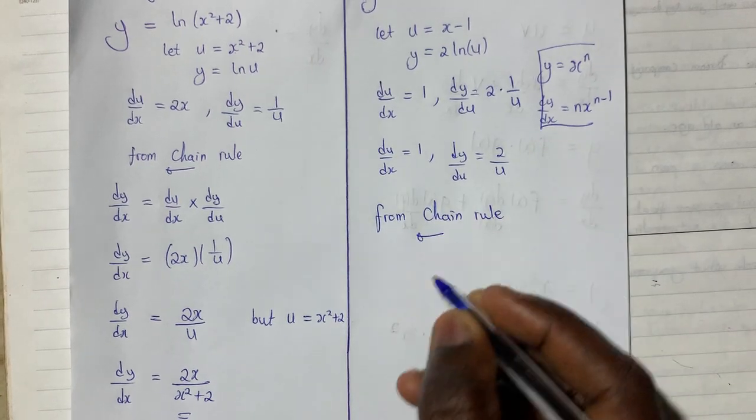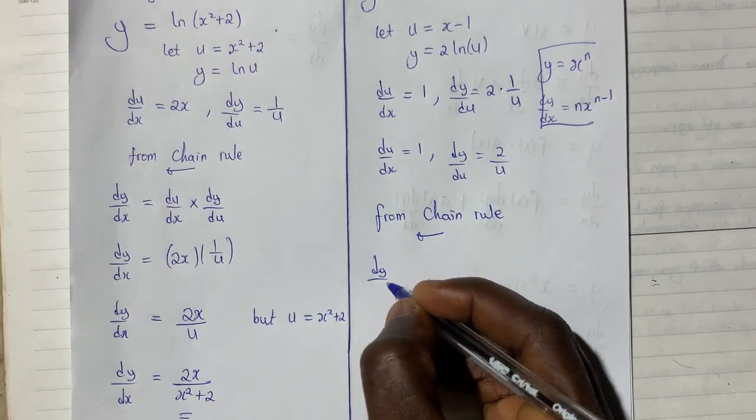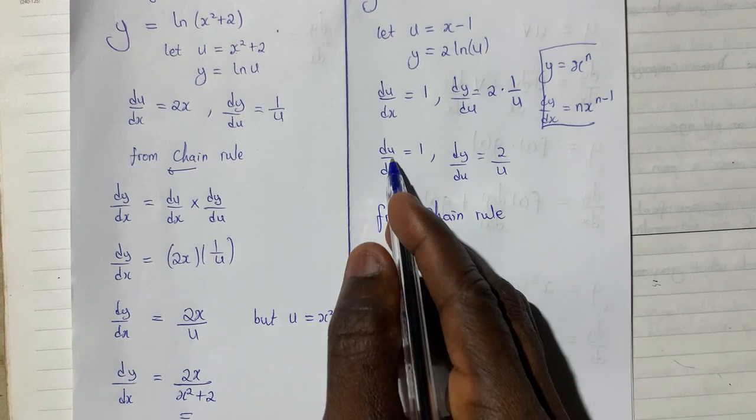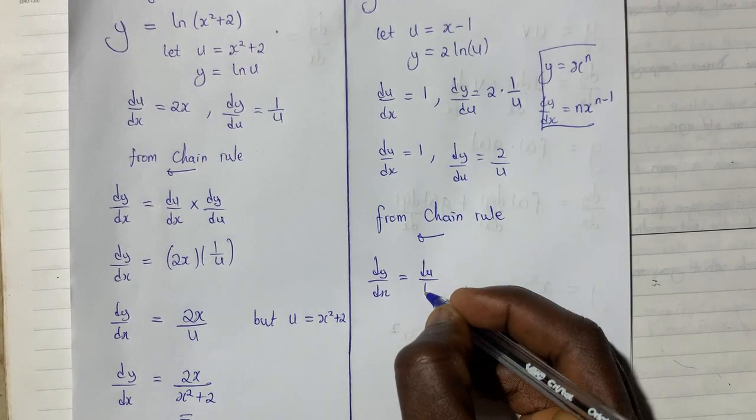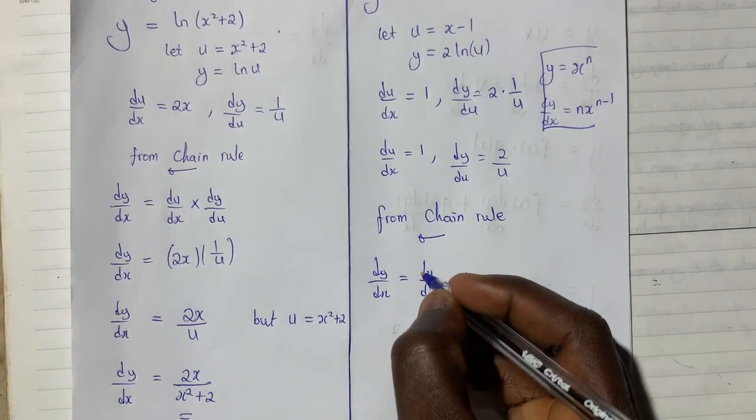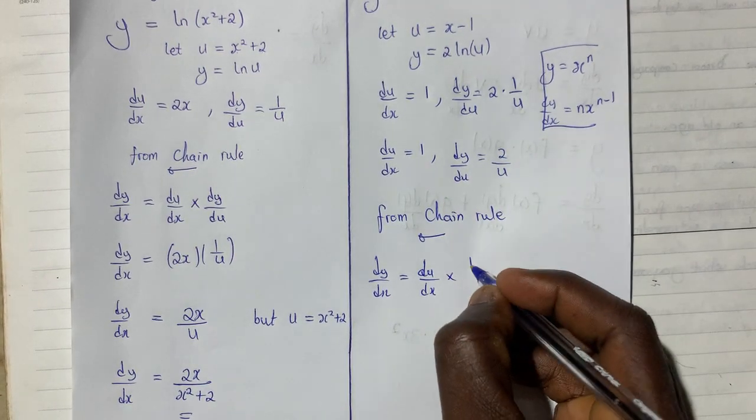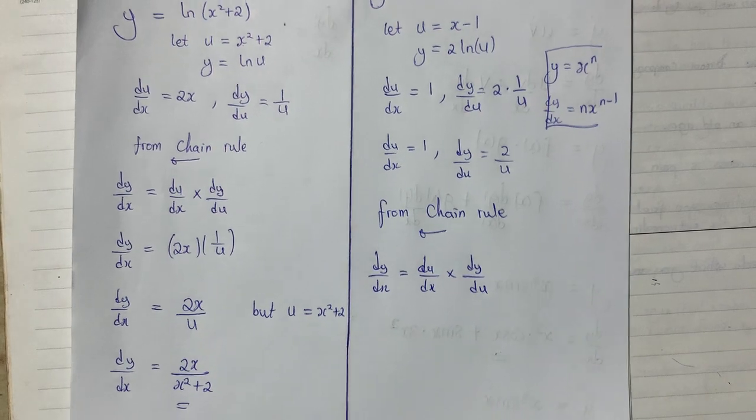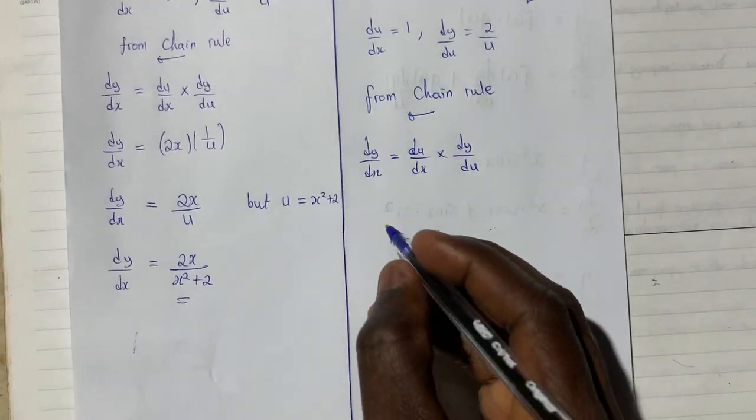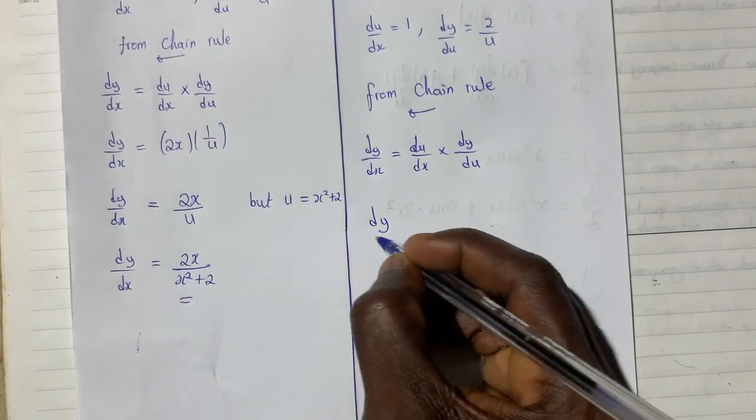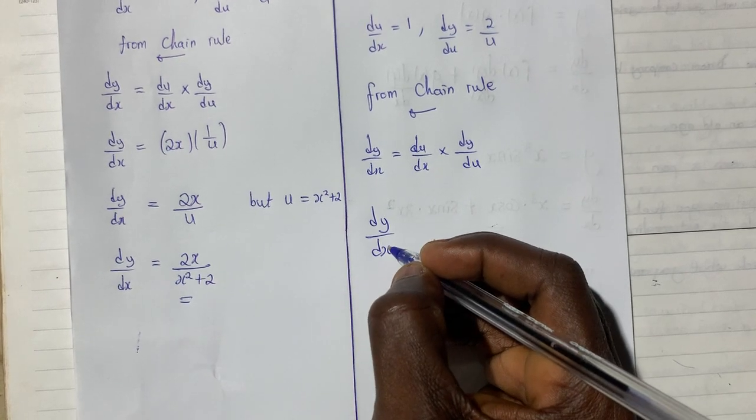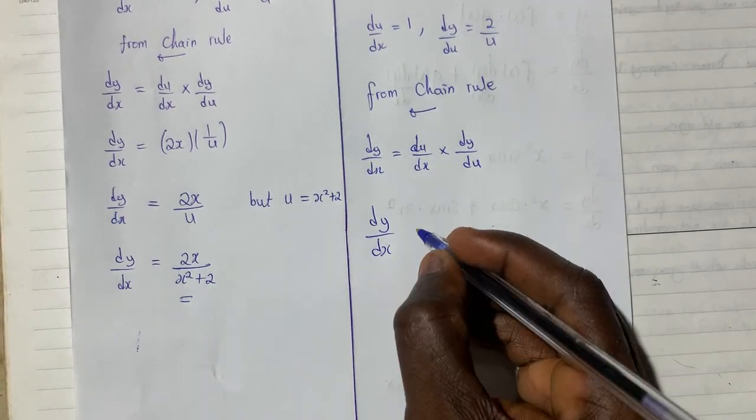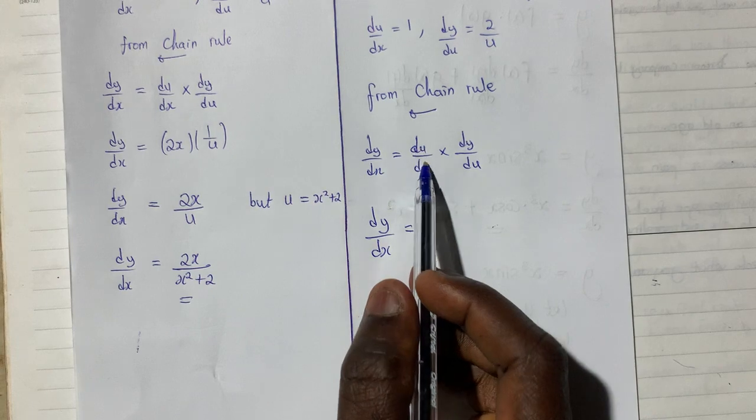I can say that dy dx is giving me the first one du dx times the next one is dy du. When I substitute the result into the formula, I am producing dy dx giving me, what was du dx? Du dx was 1.